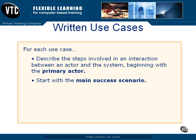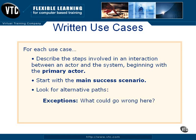Describe what happens under ideal conditions so that the actor achieves his goal. But since we don't live in an ideal world, the next thing to do is look for alternative paths. There are two kinds: one is exceptions. At each step along the main success scenario, you ask: what could go wrong here? For example, what would happen if the customer tried to withdraw more money than he had in his account? How would the system handle that?